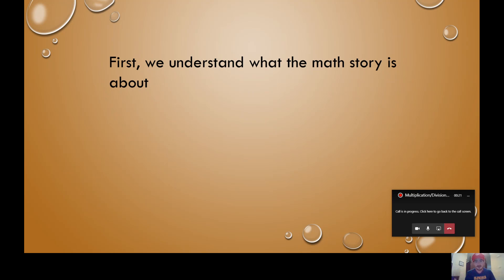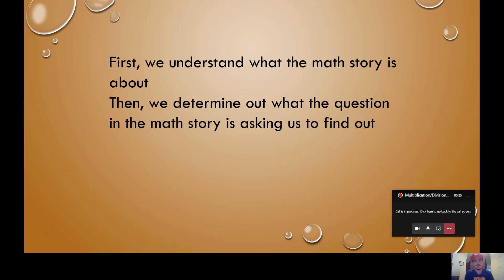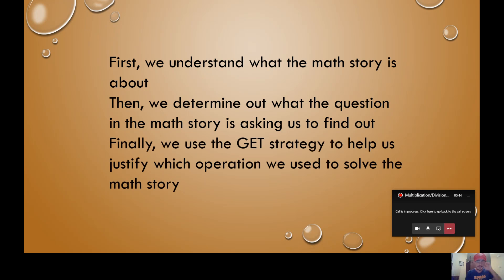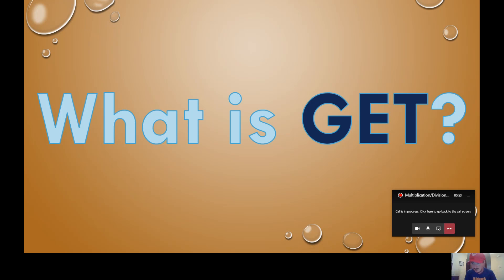When you see a new problem, first you have to understand what the math story is about. You have to read it at least two times. You really have to pay attention to those numbers and exactly what it's saying. We figure out what the question the math story is asking us to find out — in class we underline that question, it usually comes at the end. Then we're going to use the GET strategy to help us justify which operation we used. But what is the GET strategy? I'm going to teach you today.